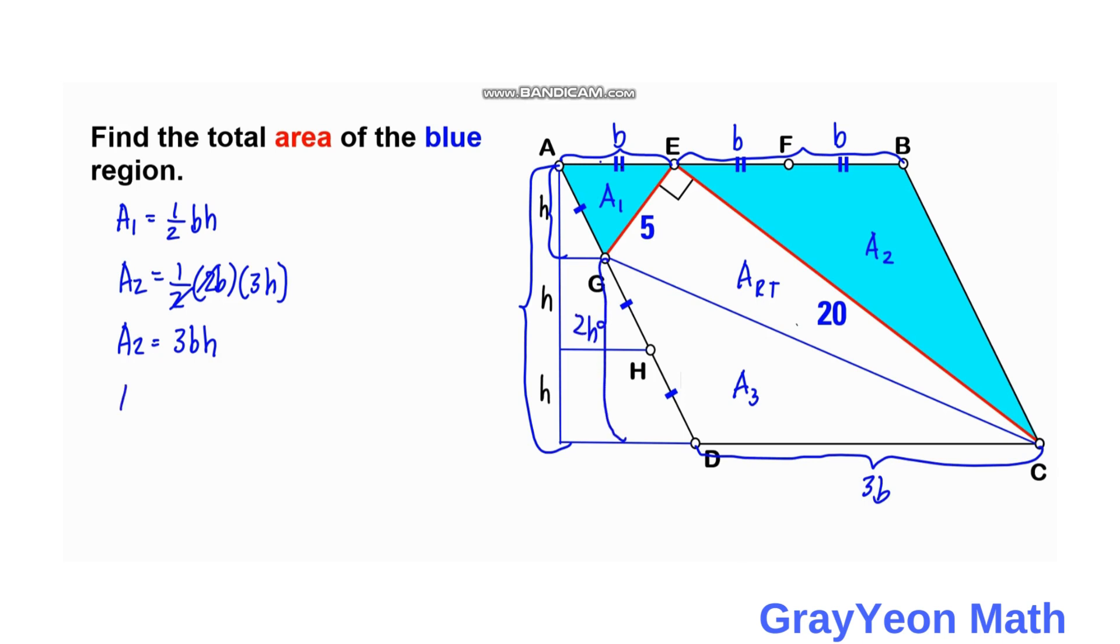So area 3 is equal to 1 half times 3b times the height, which is 2h. And we can cancel this. So area 3 is equal to 3bh also.